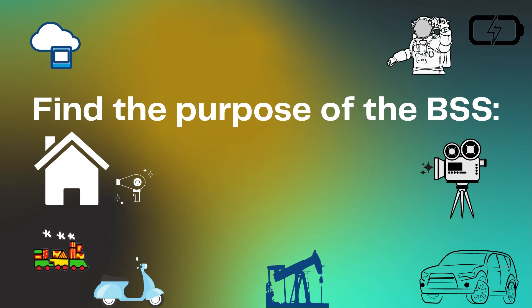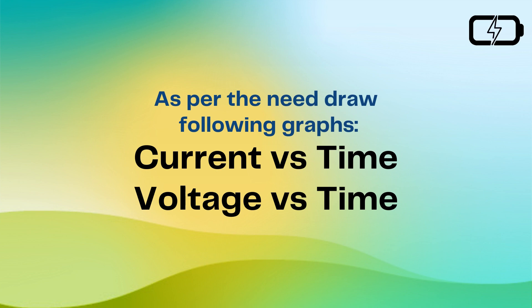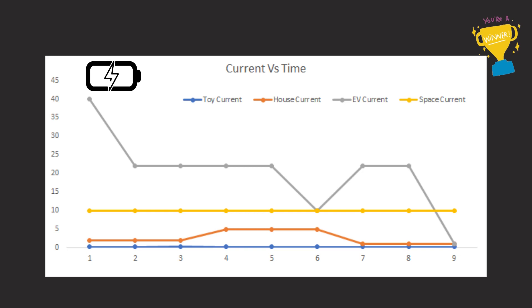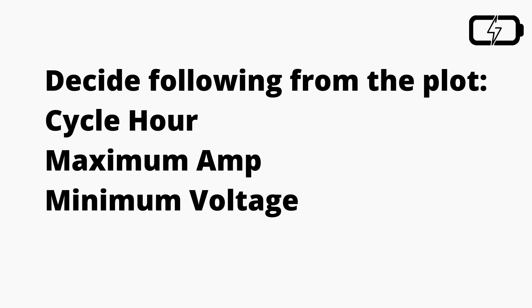The first thing is to find the purpose of the battery storage system. Then, as per the need, draw two graphs: one is current versus time and the second is voltage versus time, which is the load characteristic of your BSS. For example, if the time slot is nine hours, plot accordingly and from this graph find the cycle ampere-hours and maximum ampere required, as well as the minimum voltage required for operation.